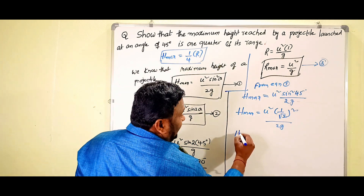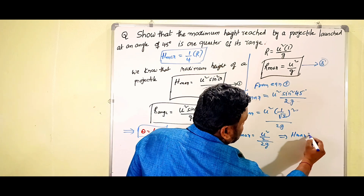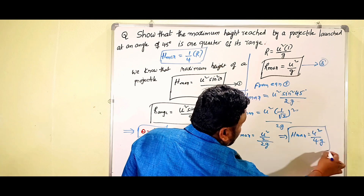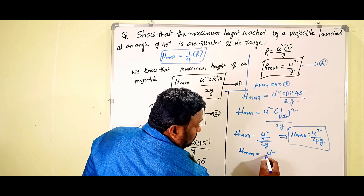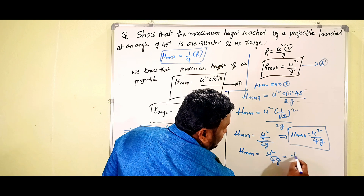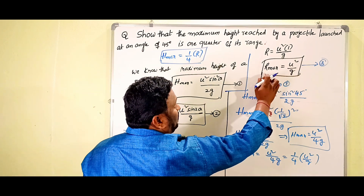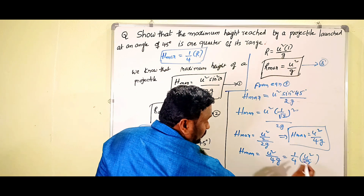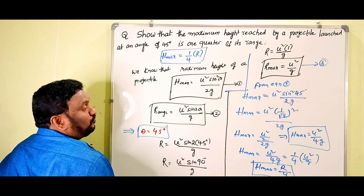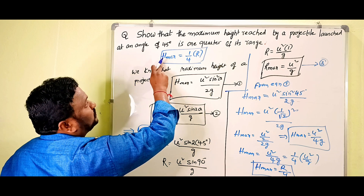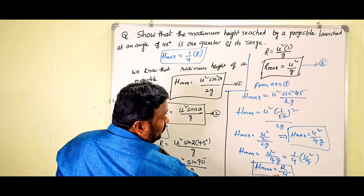This gives H_maximum = u² / 4g. We can rewrite this as H_maximum = (1/4) × (u²/g). Since from equation (3) we know u²/g = R_maximum, therefore H_maximum = R/4. This is what we had to show — the maximum height is one quarter of the maximum range.